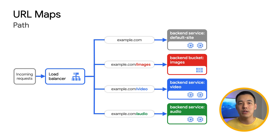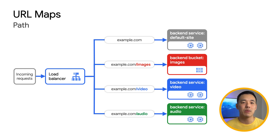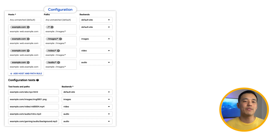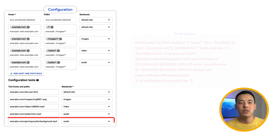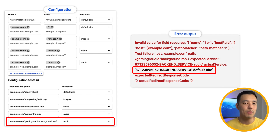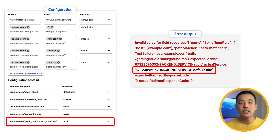Not only can you use URL maps to route traffic based on the path, but you can also route based on the host. This flexibility is crucial for traffic engineering, but could get overwhelming in validations. With this launch, you can easily configure tests to verify whether a specific URL is hitting the expected back-end. When running a test, we will identify the back-end you expect versus the back-end that traffic will actually be routed to.